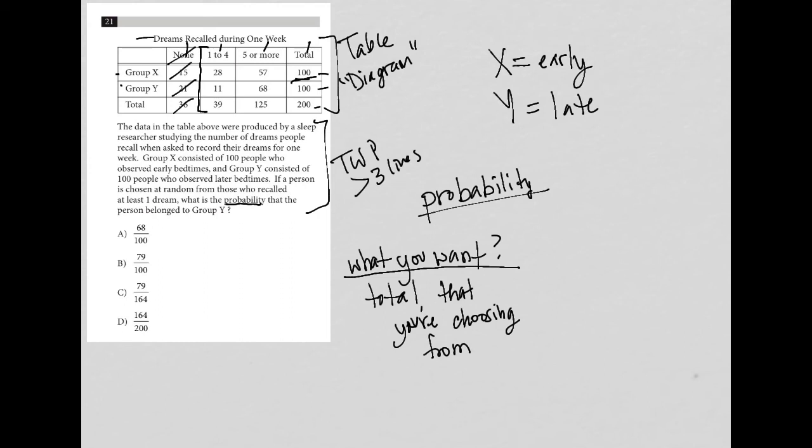When I look at group Y and the number of people who had at least one dream, what I see there is 11 plus 68. So my numerator is 11 plus 68.